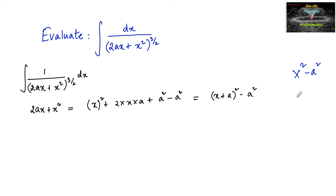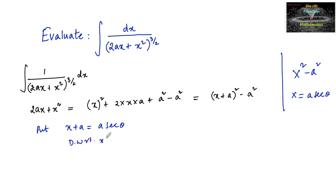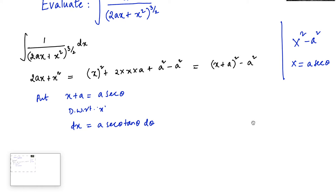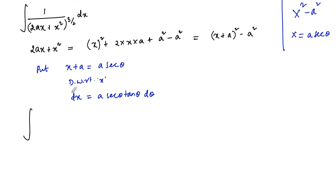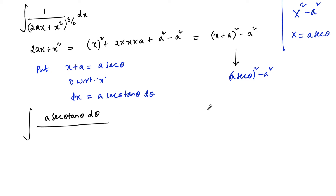Since our expression is in the form x² − a², our substitution is x + a = a·sec(θ). Upon differentiating, dx = a·sec(θ)·tan(θ) dθ. So we can write the integral: dx becomes a·sec(θ)·tan(θ) dθ, and 2ax + x² becomes (x + a)² − a², where (x + a)² = (a·sec(θ))².